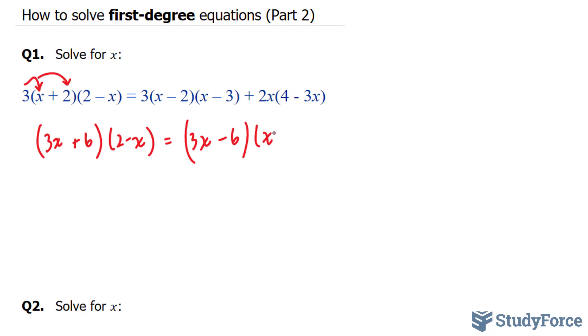2x times 4 and 2x times negative 3 gives us plus 8x minus 6x squared. 2x times minus 3x is minus 6x squared. Now we have to use the distributive law and expand these two binomials.